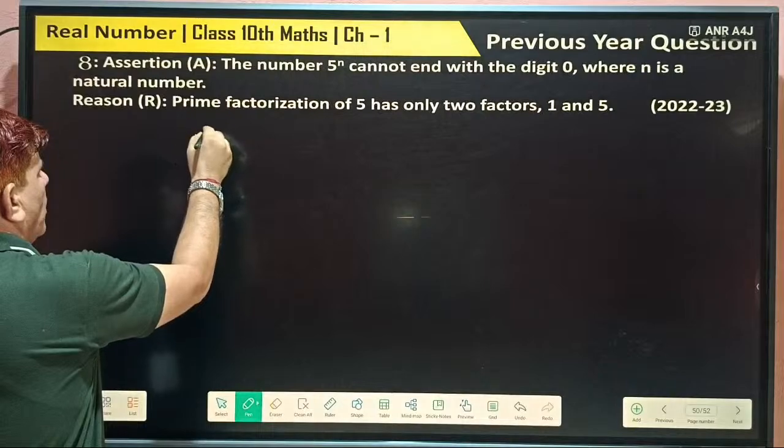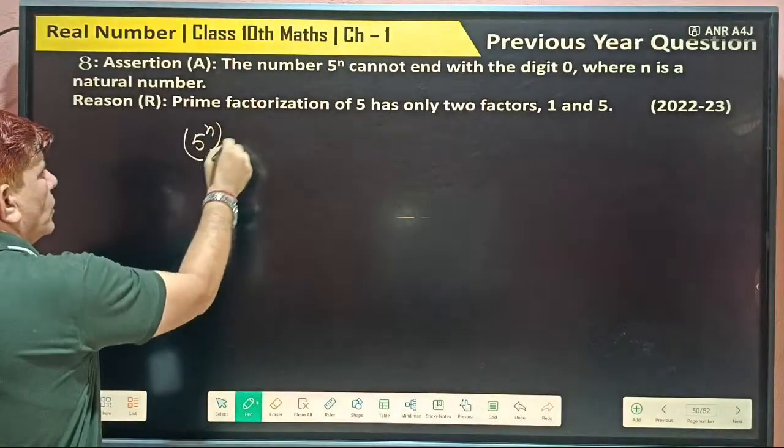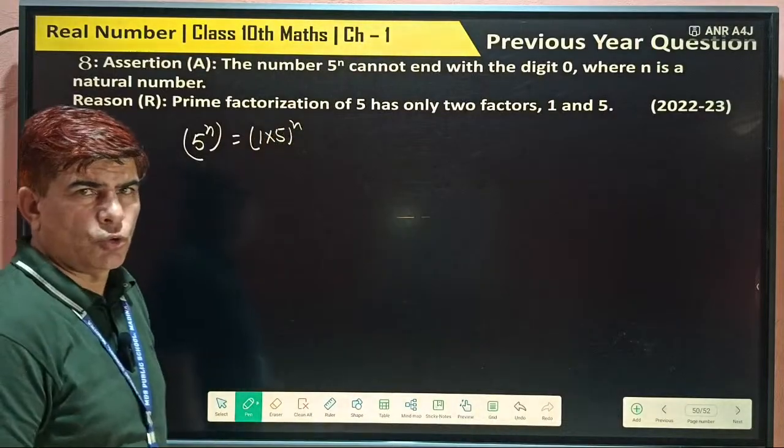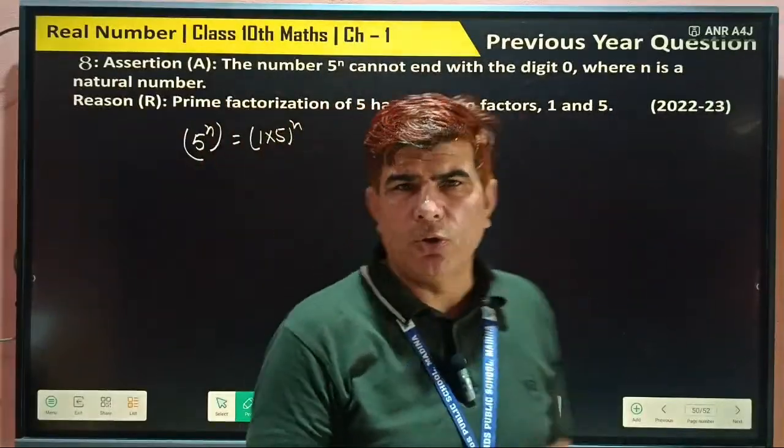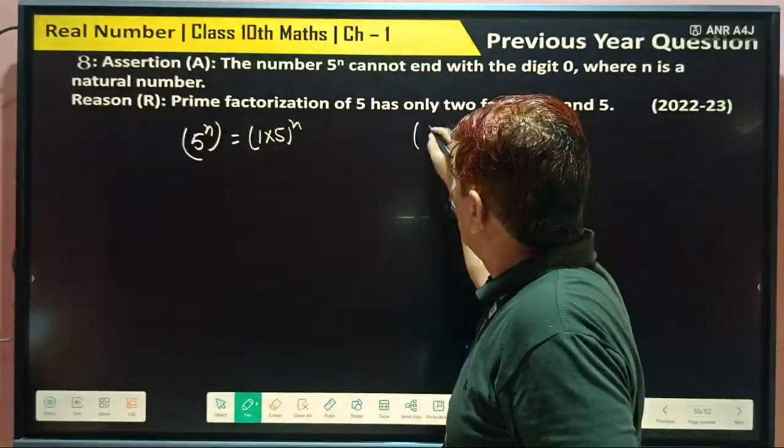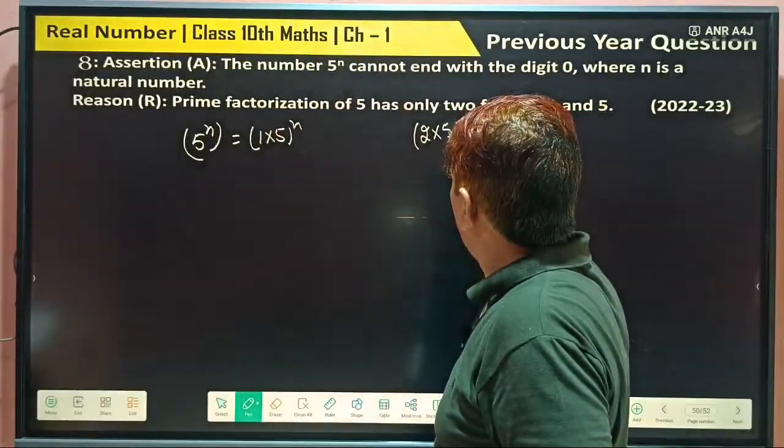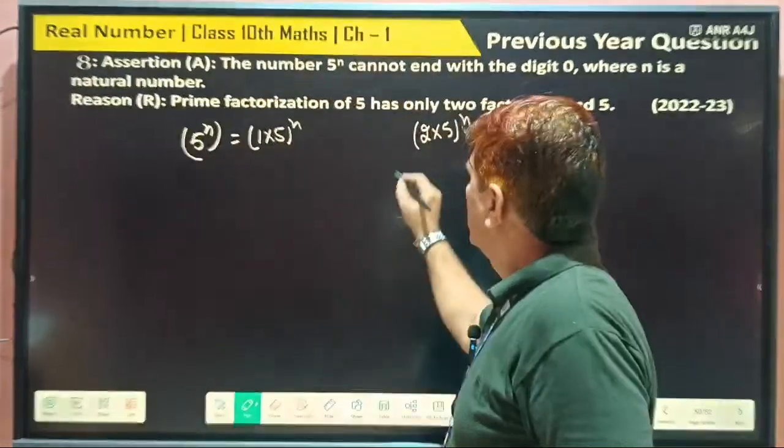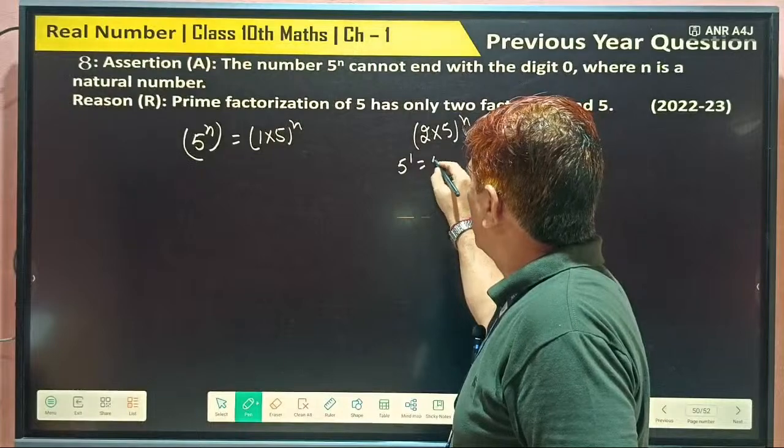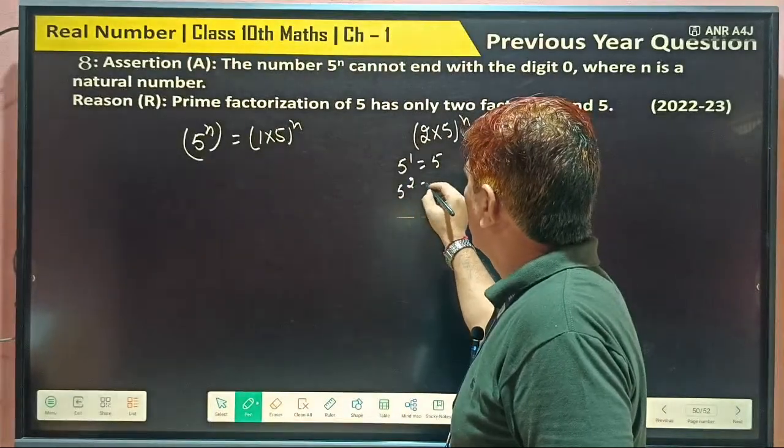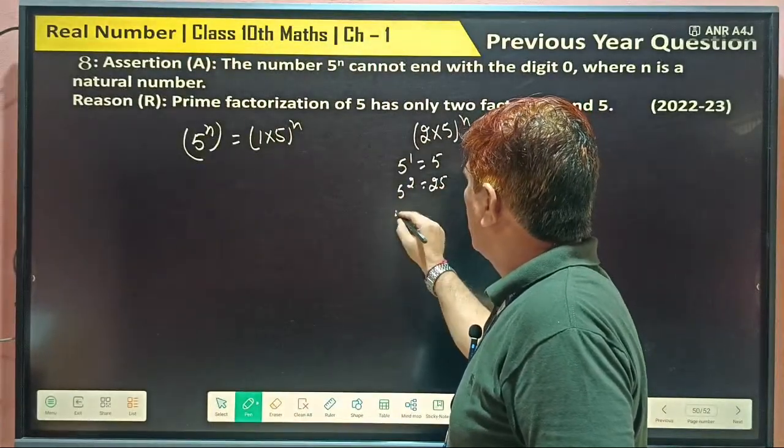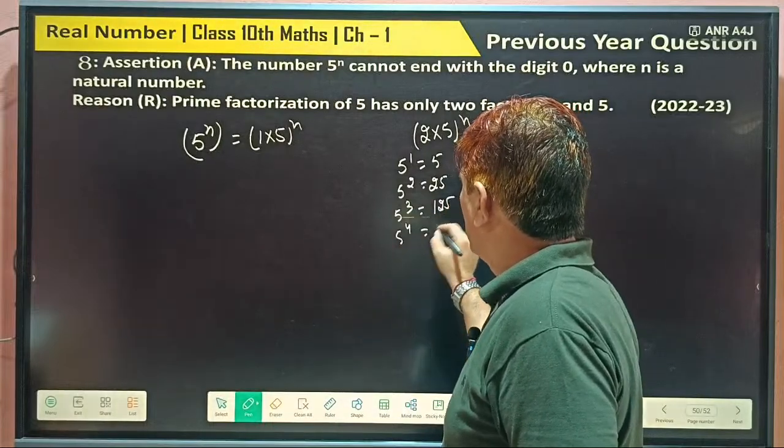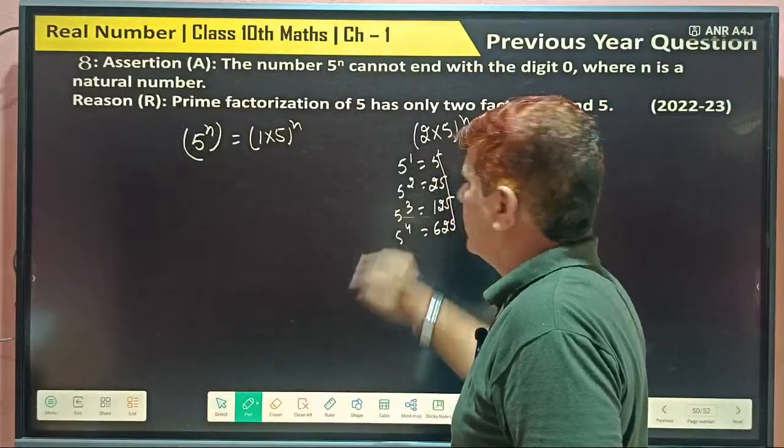So 5 power N. What are its factors? This 1 into 5 power N. To get unit digit as 0, we need 2 into 5 power N. 5 power 1 is 5, 5 power 2 is 25, 5 power 3 is 125, 5 power 4 is 625, all end with 5.